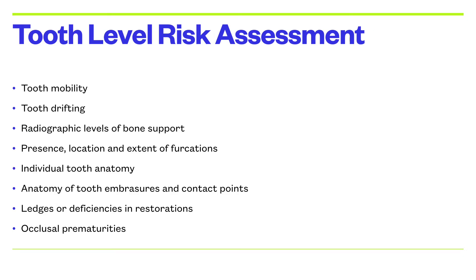Coming down to tooth level risk assessment, we monitor and evaluate each individual tooth to determine the level of risk. We look for tooth mobility, grade 1 to grade 3 or grade 4. If the tooth has drifted in the past, it means it is somewhat periodontally compromised and that will help you put the patient in a high risk category.